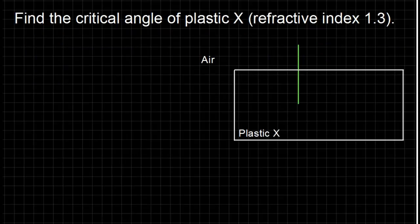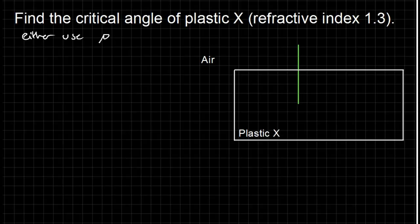Now to look at another example question. This time, we're being given the refractive index of 1.3, and we can either use the equation we derived just now, mu is equal to 1 over sine c, or we can use Snell's Law in full.